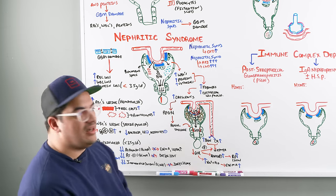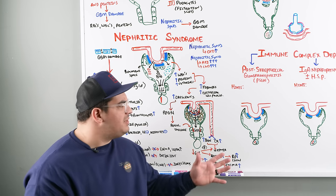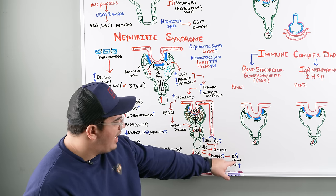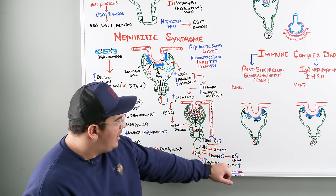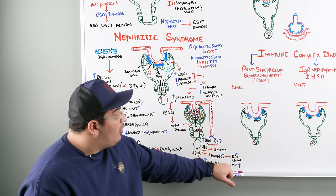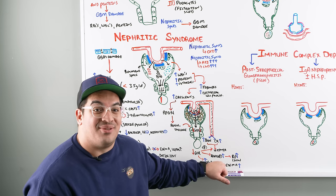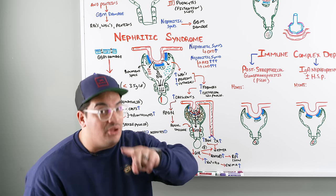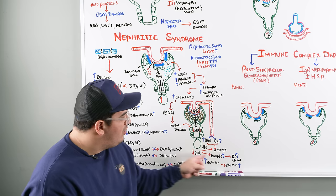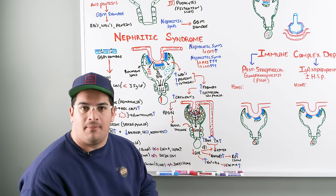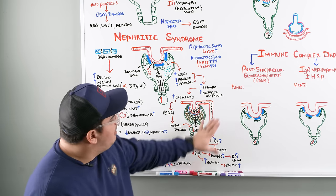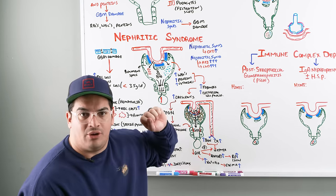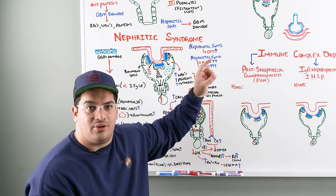Some of these effects — hypertension and edema — may sound similar to nephrotic syndrome, but in nephrotic syndrome the edema was more due to low albumin, whereas in nephritic syndrome it's more due to low GFR. Renal failure is going to be at higher incidence in patients with nephritic syndrome compared to nephrotic syndrome.